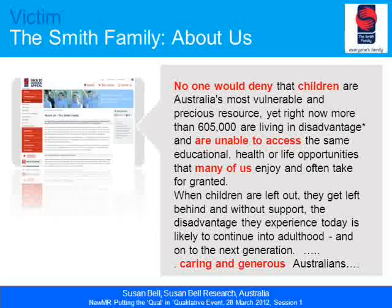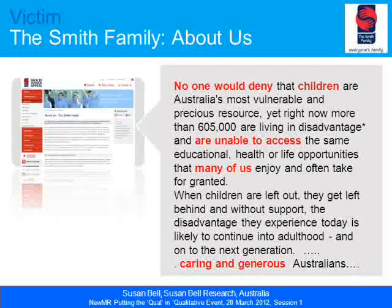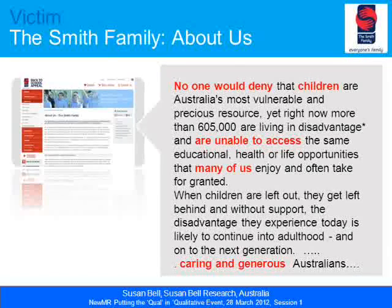They talk about children as the focus of their website — 'Australia's most vulnerable and precious resource.' They give a very precise number: 605,000 who are unable to access — with no modifiers, just 'unable.' They contrast 'many of us enjoy and often take for granted' with children who are left out. And uniquely among the ten charities, the Smith family used an adjective to describe their donors, calling them 'caring and generous Australians.'